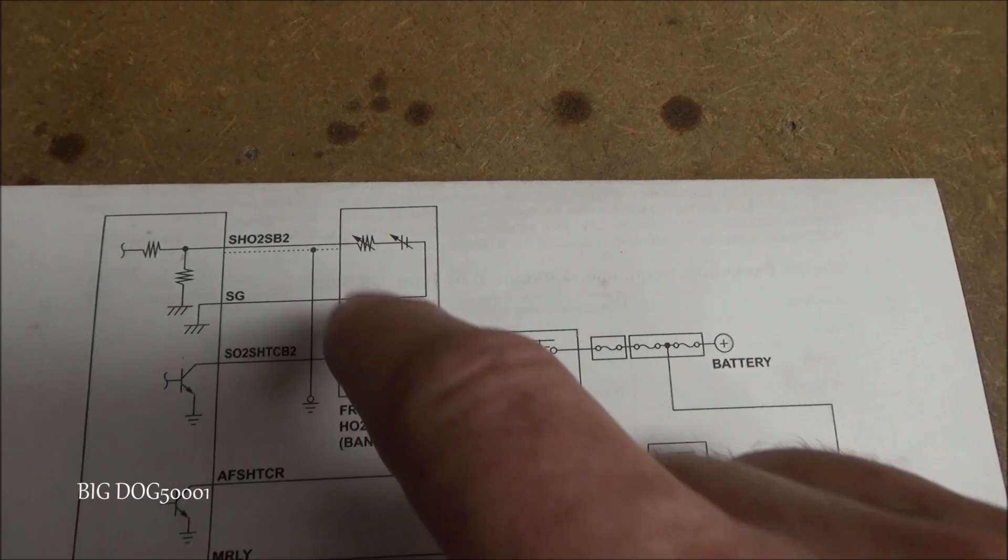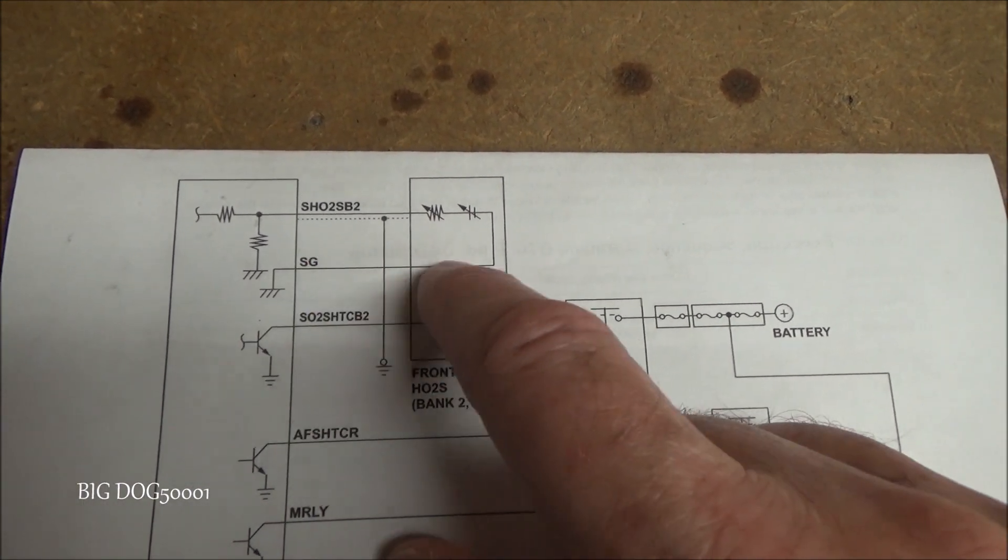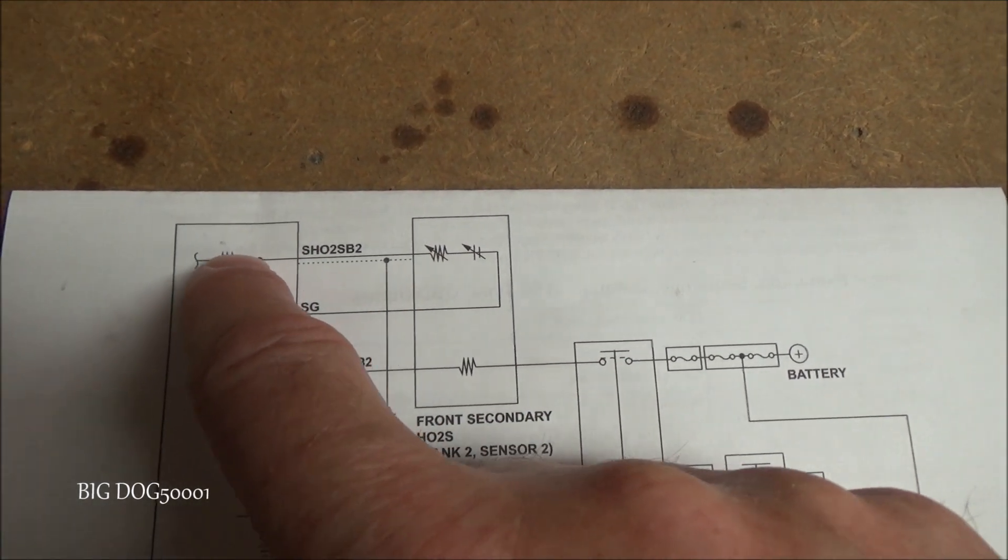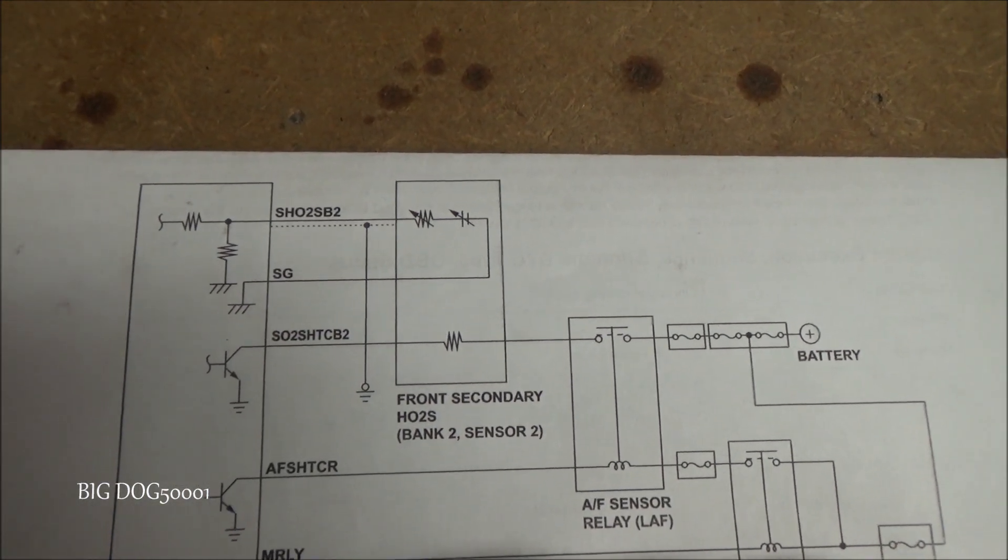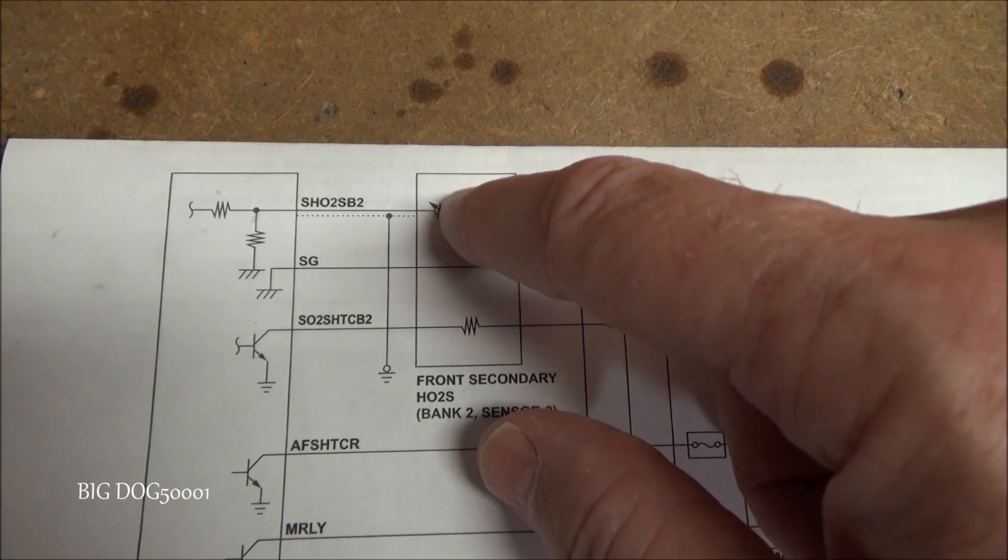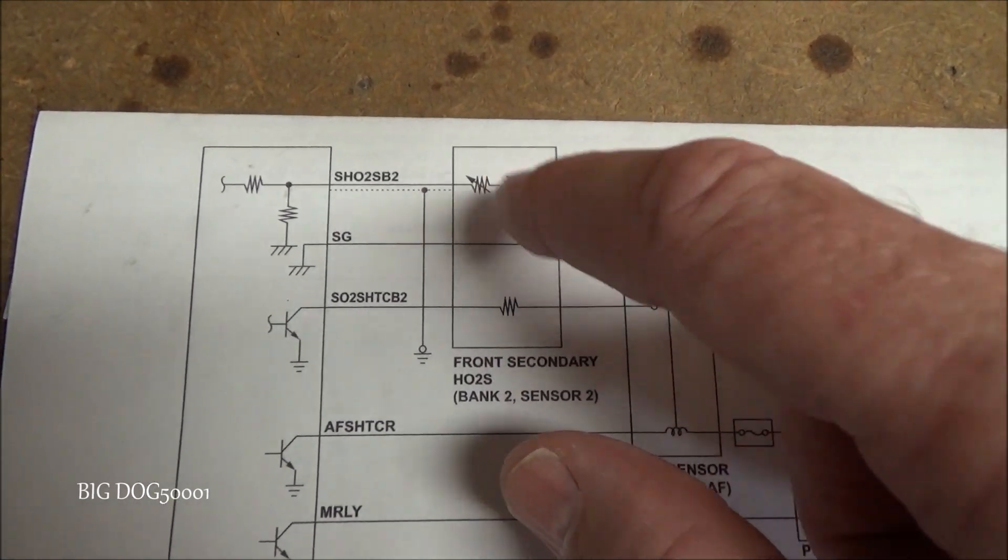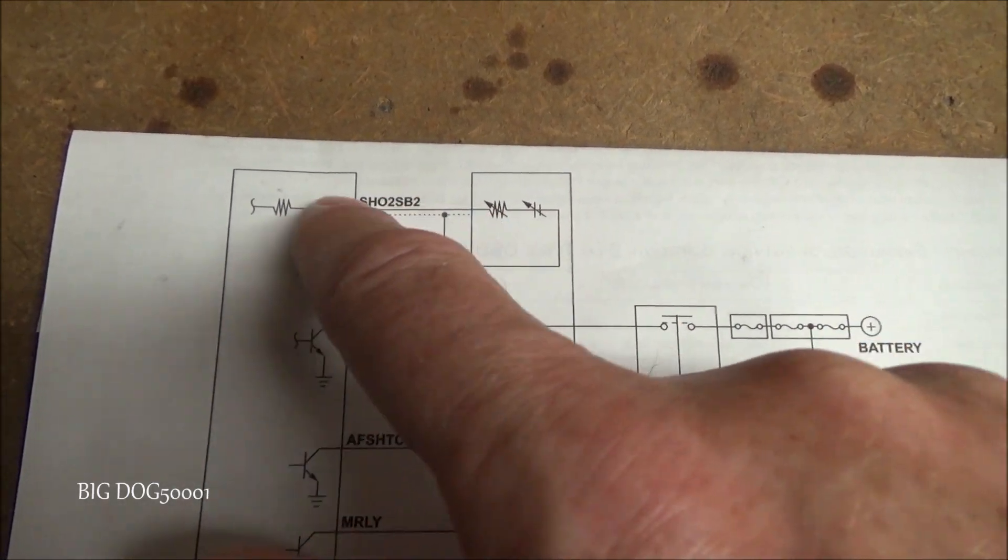This over here is going to be our sensor portion. So this wire right here is our signal ground. So that's a ground for the signal and this is our actual signal wire. We have voltage coming in and the engine computer uses that for diagnostics. And at a certain point our oxygen sensor starts to generate its own voltage internally and that voltage overtakes the voltage that's coming in here.